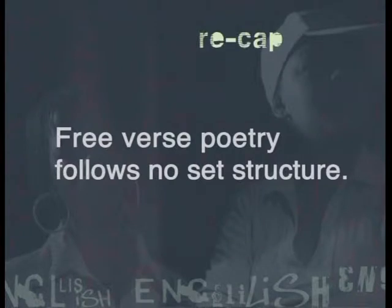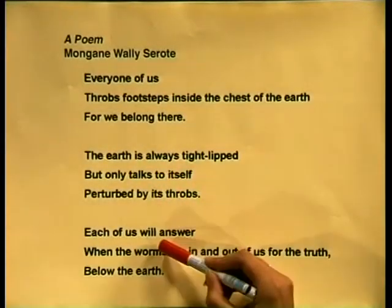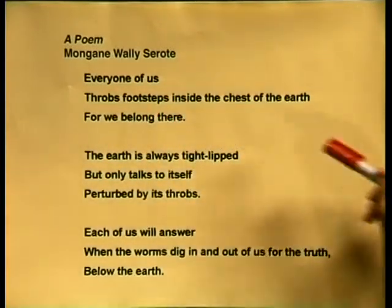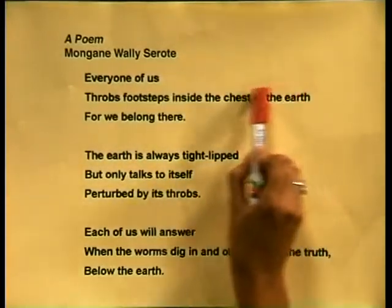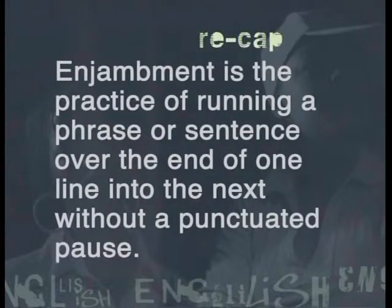This poem is an example of free verse poetry. Free verse poetry follows no set structure. One of the reasons I can classify this poem as free verse at first glance is because there are no rhyming words in the poem at all. Now let's look at the structure more closely. This poem is quite simple: three stanzas consisting of three lines each. Notice how the poet makes use of enjambment to ensure the three lines flow into one sentence per stanza. Enjambment is the practice of running a phrase or sentence over the end of one line into the next without a punctuated pause.